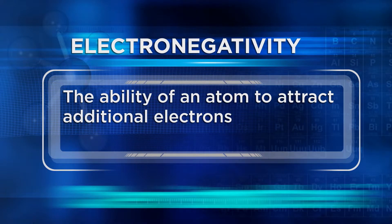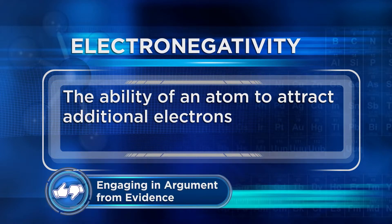Electronegativity is the ability of an atom to attract additional electrons, and is an important property of an atom when making chemical bonds. We'll explore chemical bonds in depth in Unit 4, and you'll see why electronegativity is possibly the most important elemental property that we will study. We can make so many predictions about how elements will interact with each other if we have a good understanding of electronegativity.